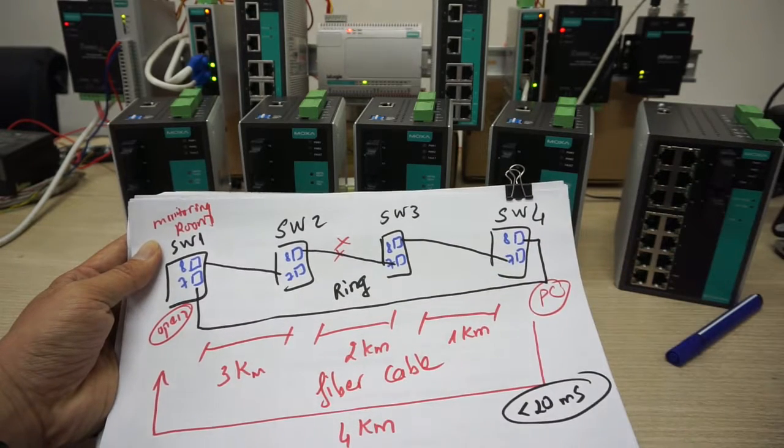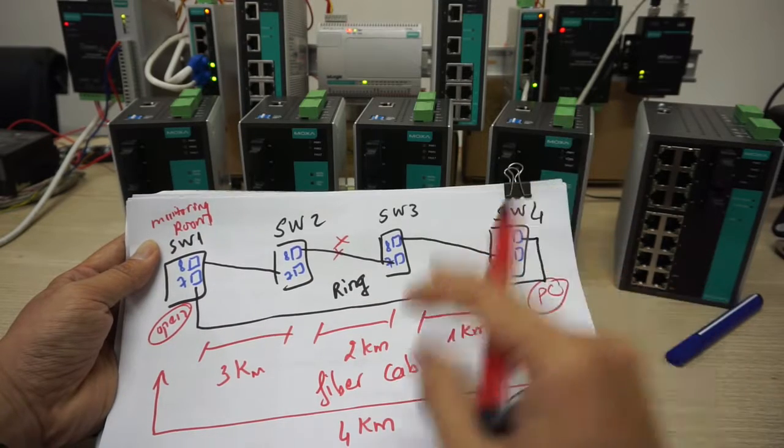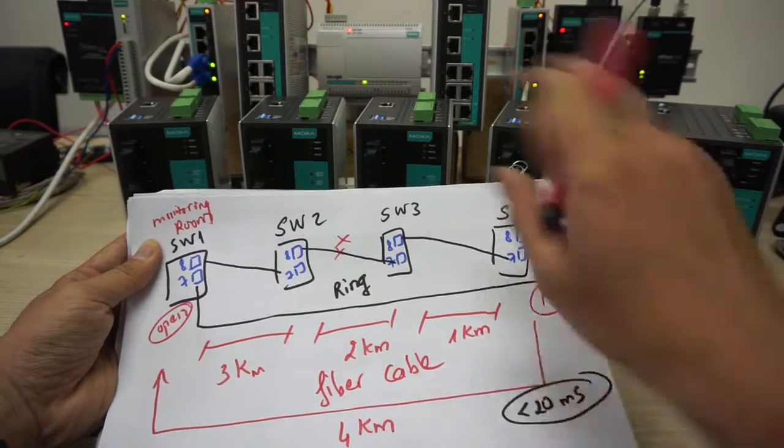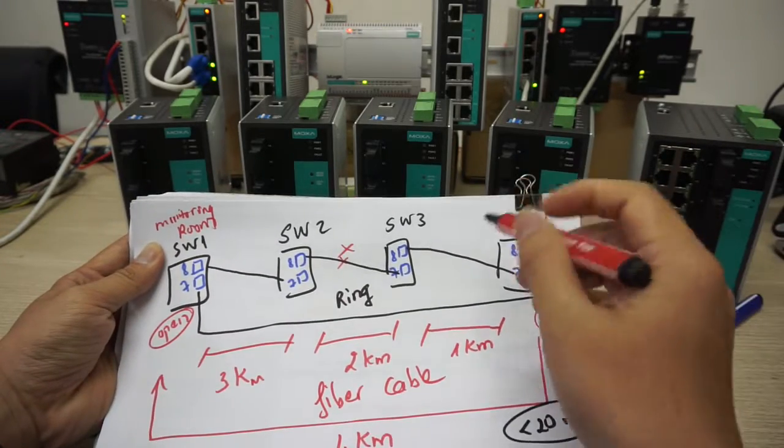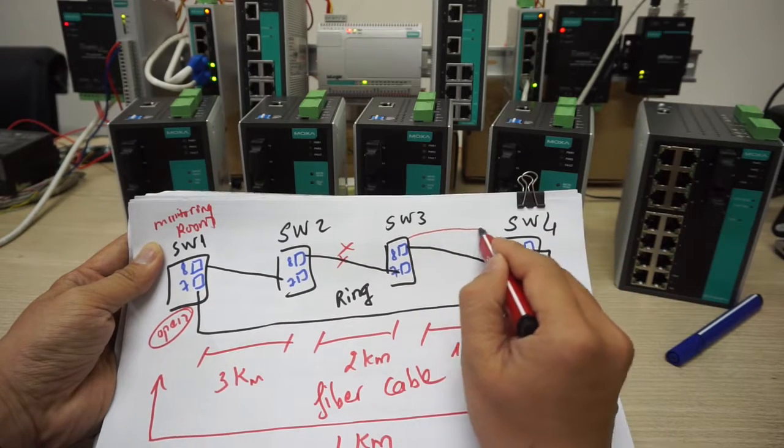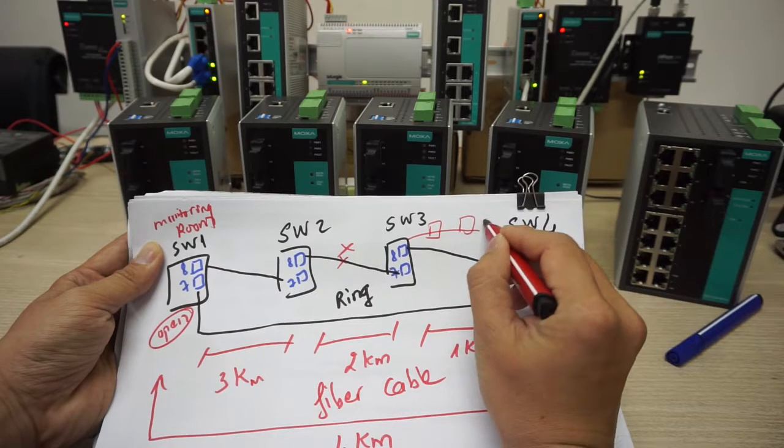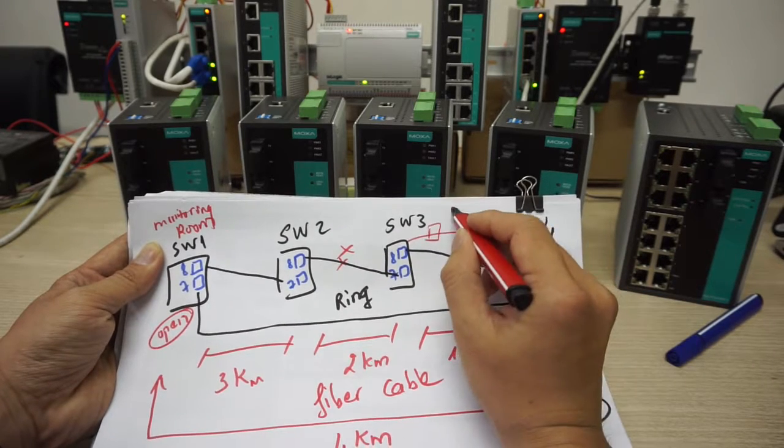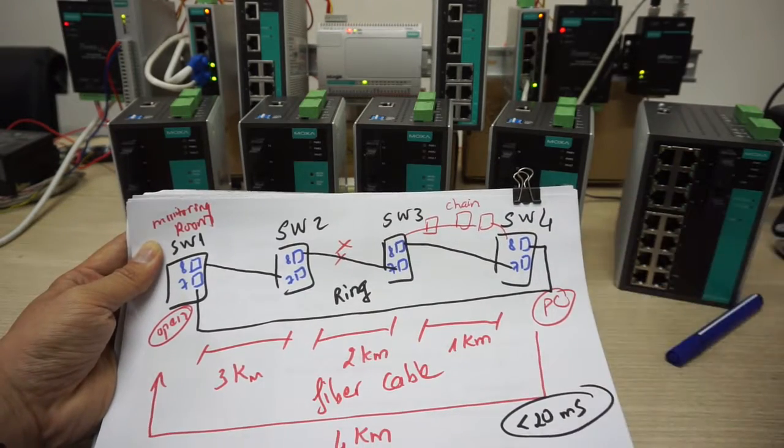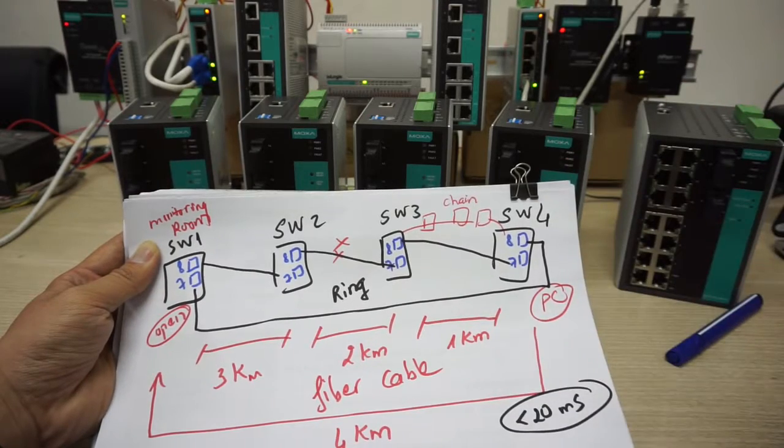So this is a really helpful, useful function for us to use in industrial environments. Especially when you want to open your network, you can use the Turbo Ring chain like this. Between switch 3 and 4 you can add more connections: another switch, another switch, another switch. This is the chain. I mean you want to expand your network. Your entire network will be easy.